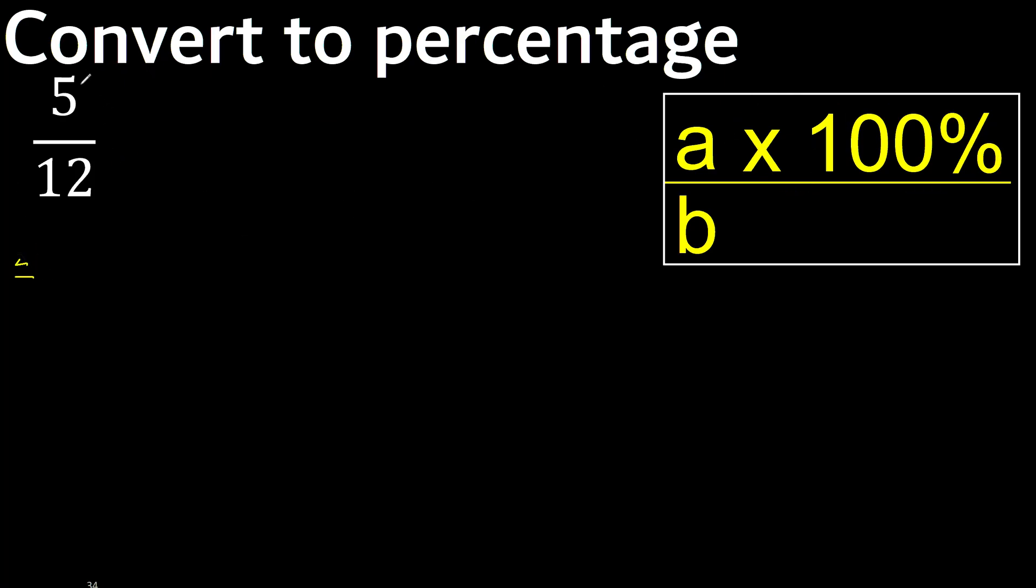Multiply by 100. 5 multiplied by 100 is 500%, 500 divided by 12.